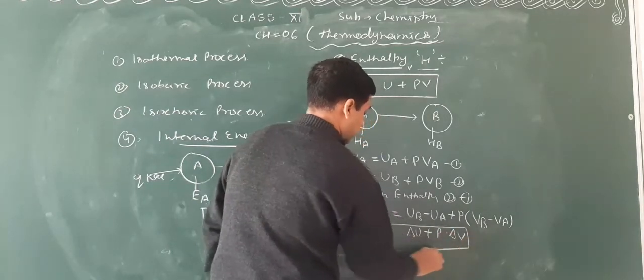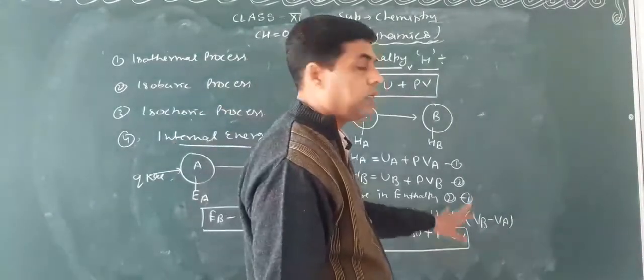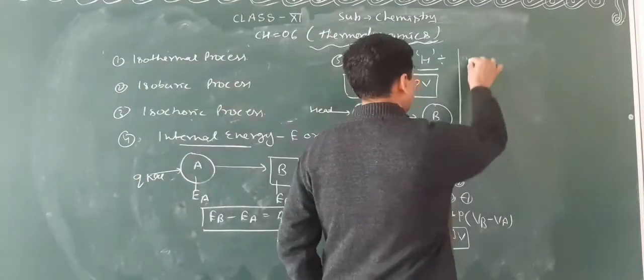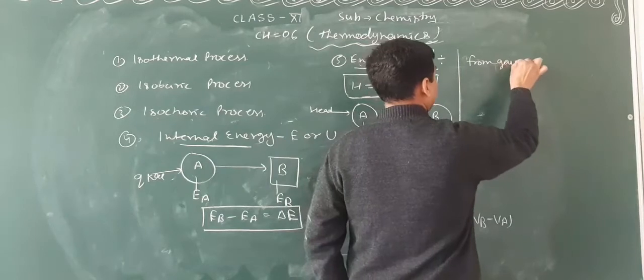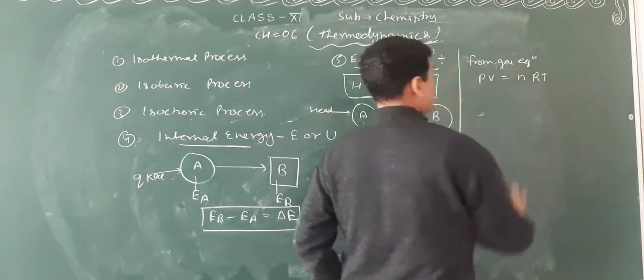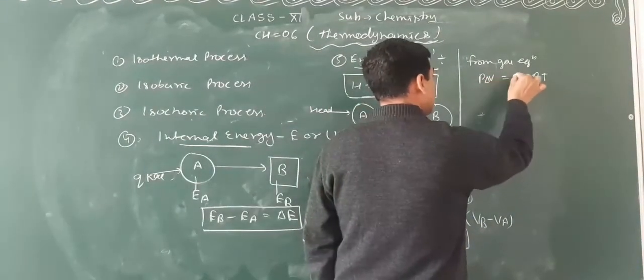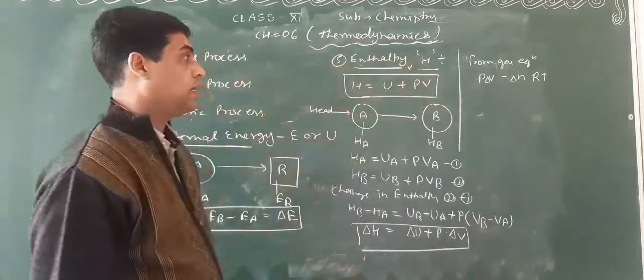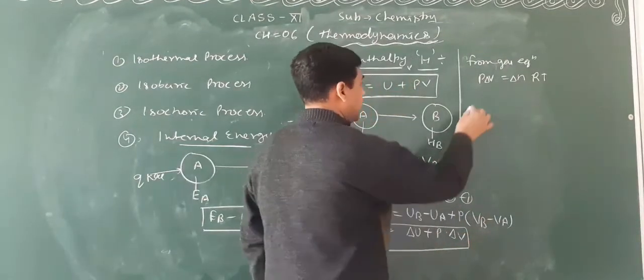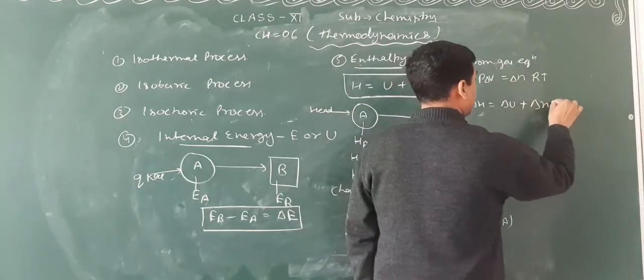Later we take a look at the equation here, using the equation with n into R, number of moles. We have delta n into R is equal to delta U plus P into delta V, which equals delta nRT.